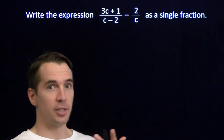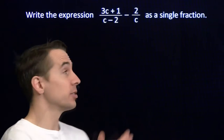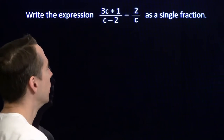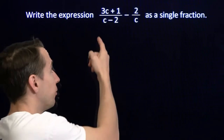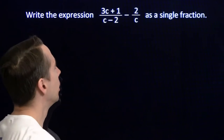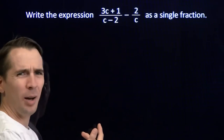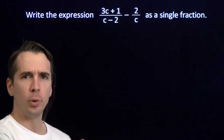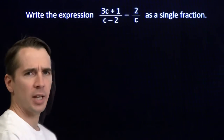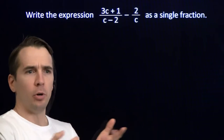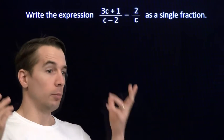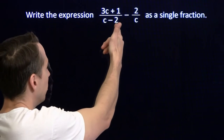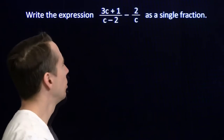Now that we've tackled a few fraction addition and subtractions with some variables thrown in, I've got a little bit more complicated one here for you. We know the drill — we're going to find a common denominator. But how do we find the common denominator? These are a little bit more unusual denominators than before. Before we just had a variable or some power of a variable, maybe multiplied by some constant. Here I've got a variable minus a constant. What do we do here?